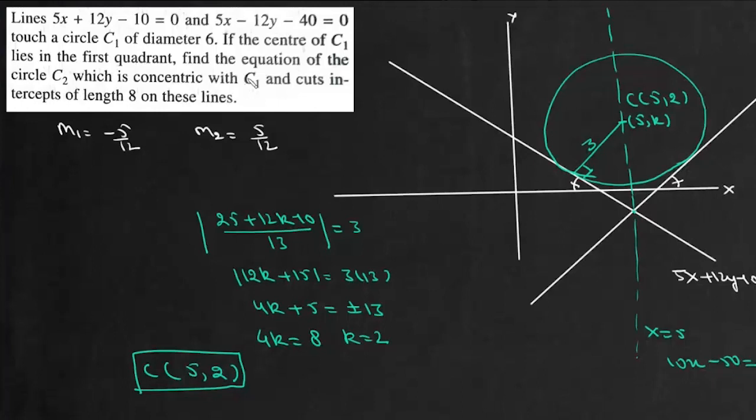Now it says we have to find equation of the circle C2 which is concentric with C1. So that means for the circle C2, center is again at 5 comma 2. Now C2 cuts an intercept of length 8 on these lines. So C2 cuts an intercept of 8 units on each of these lines. So we'll take this one line 5x plus 12y minus 10 equals 0.